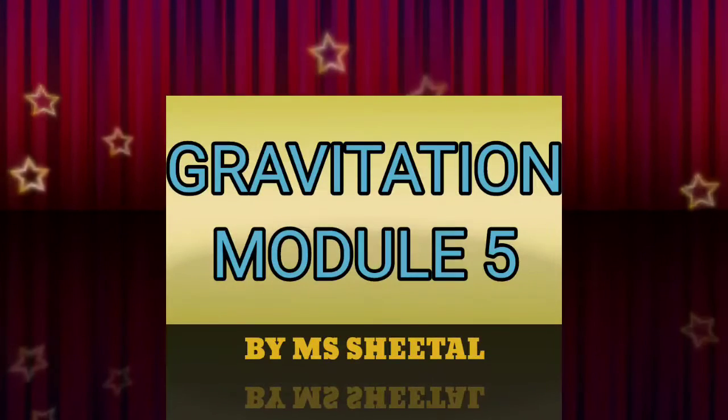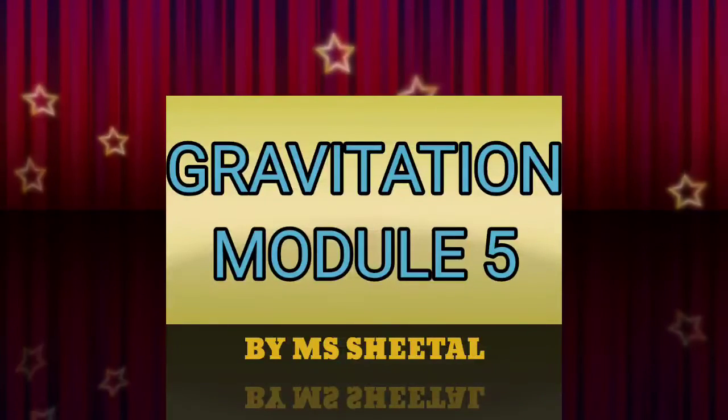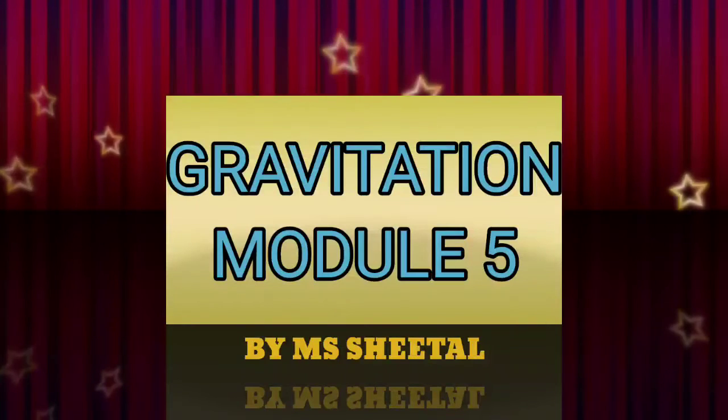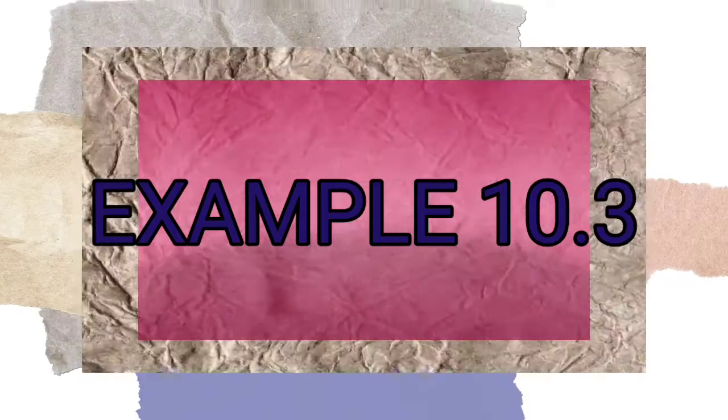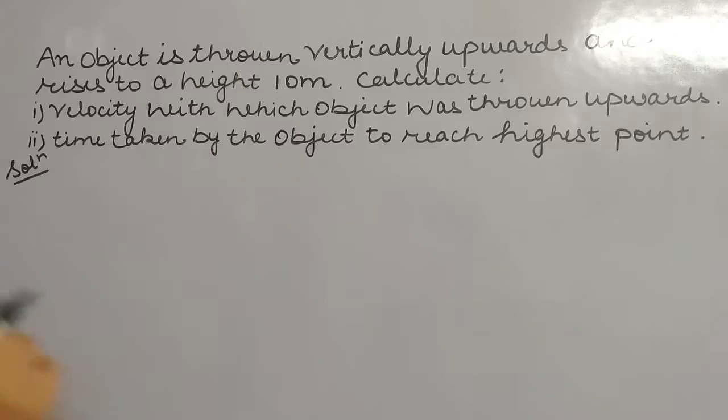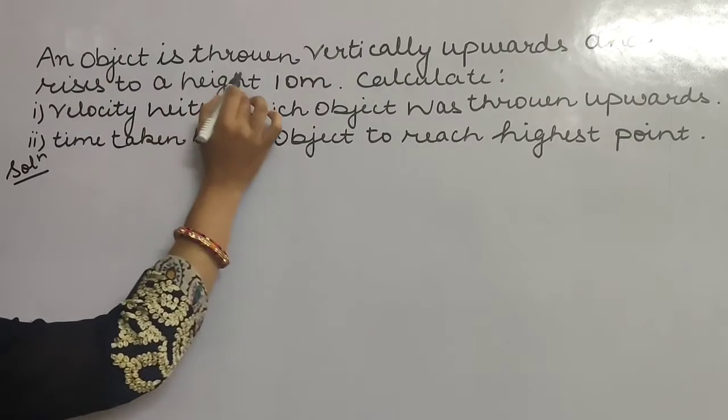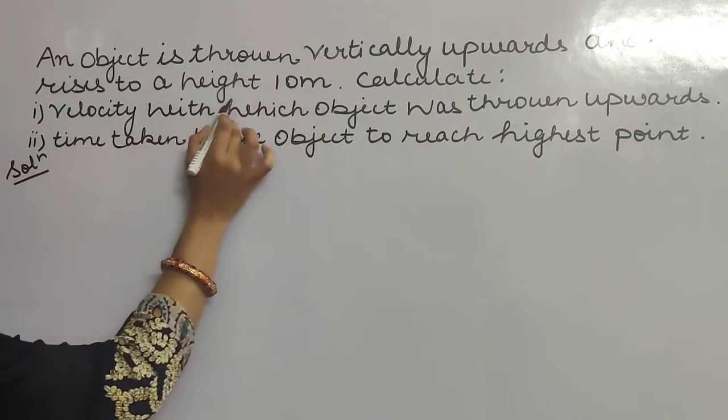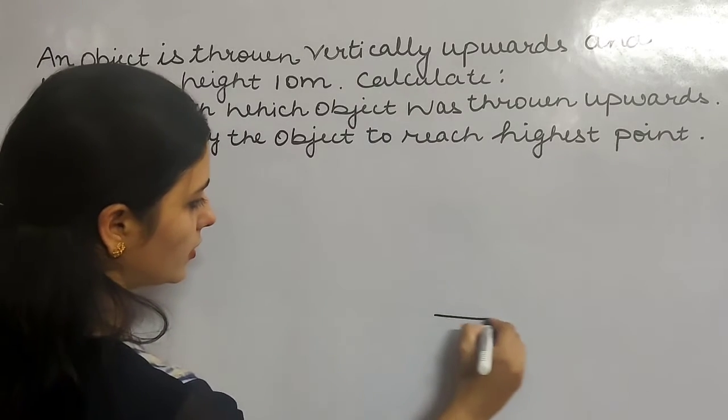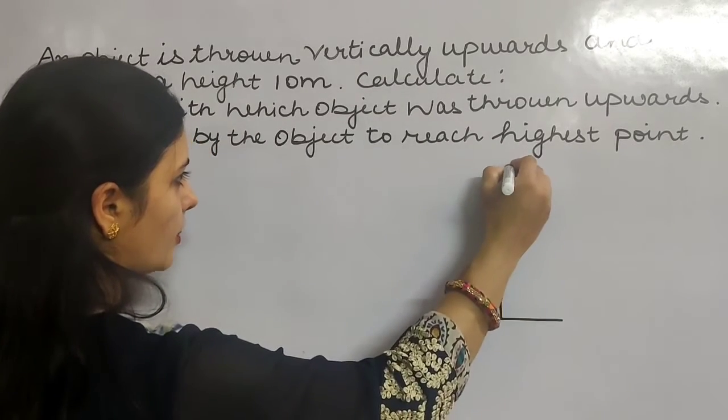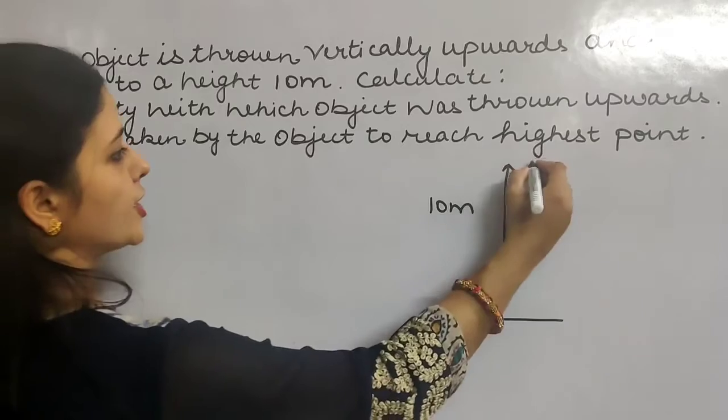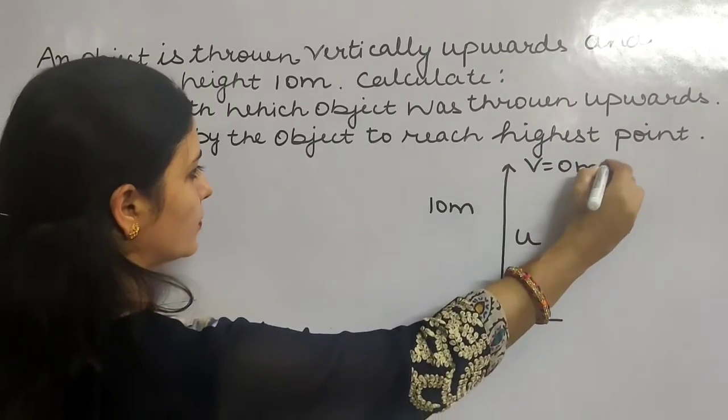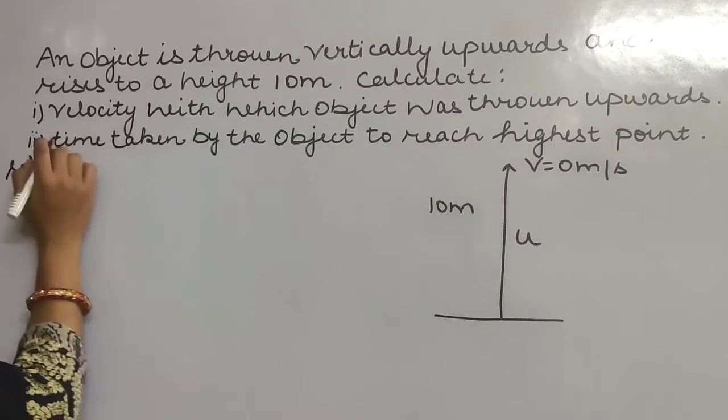Greetings everyone, today we will discuss index examples as well as index questions. Now see example 10.3. The question: an object is thrown vertically upwards and rises to a height 10 meters from the ground. The object is thrown vertically upwards to a height 10 meters with velocity u. At the highest point, final velocity becomes zero.